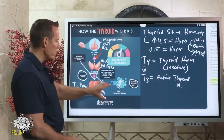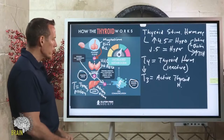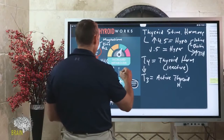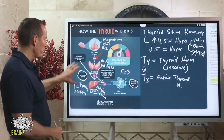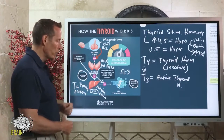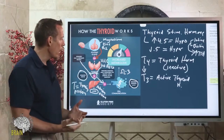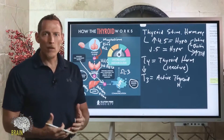For T3 to communicate with your DNA, you must have vitamin A and vitamin D. The final step — the actual increase in metabolism — requires omega-3 fatty acids. These nutrients are all non-negotiable for your thyroid biochemistry.